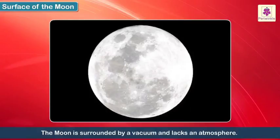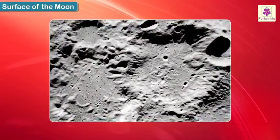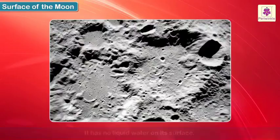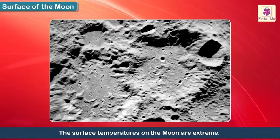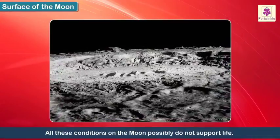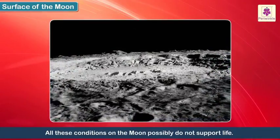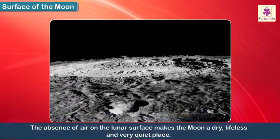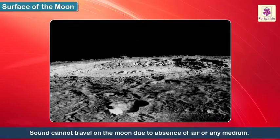The Moon is surrounded by a vacuum and lacks an atmosphere. It has no liquid water on its surface. The surface temperatures on the Moon are extreme. All these conditions on the Moon possibly do not support life. The absence of air on the lunar surface makes the Moon a dry, lifeless and very quiet place, as sound cannot travel in the absence of air or any medium.